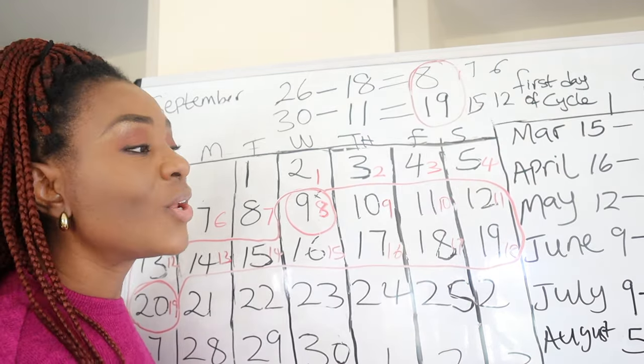One important note: if your cycle length is consistently less than 27 days — meaning your cycle typically runs between 21 and 27 days and never goes past 27 — then this method will not work for you. However, if you had at least one 28-day cycle among your shorter cycles in your six-month record, you can still use this method.